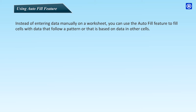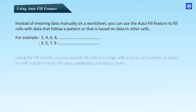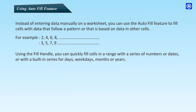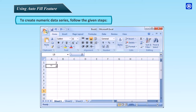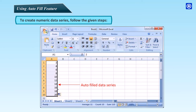Using AutoFill feature: instead of entering data manually, you can use the AutoFill feature to fill cells with data that follows a pattern or is based on data in other cells — for example, 2, 4, 6, 8 or 3, 5, 7, 9. Using the Fill Handle, you can quickly fill cells with a series of numbers, dates, weekdays, months, or years. To create a numeric data series, type the starting values — for example, type 2 and 4 in the first two cells, select those cells, then click and drag the Fill Handle on the lower-right corner to enclose the desired area.